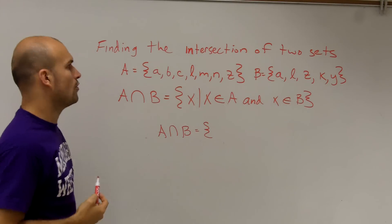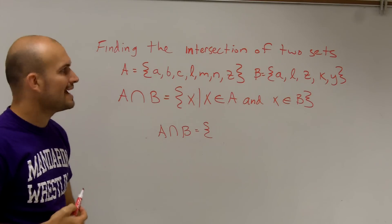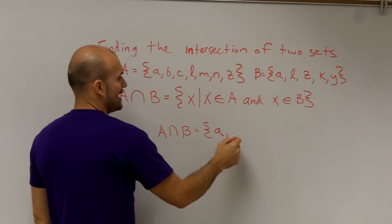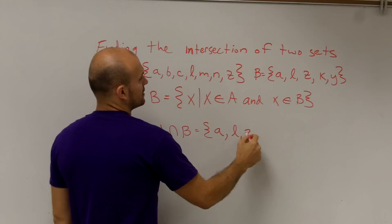But k, y they don't share, or b, c, m, n they don't share. So A union B is only the elements they share, which would be a, l, z.